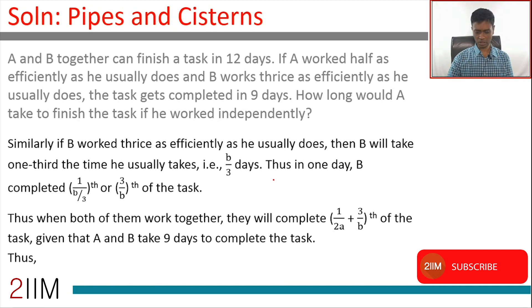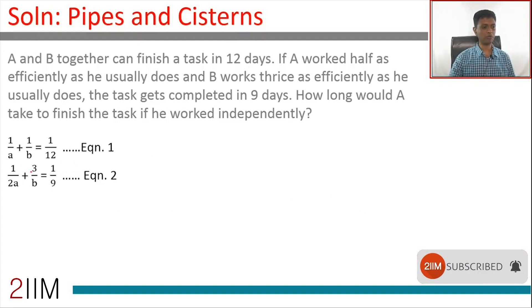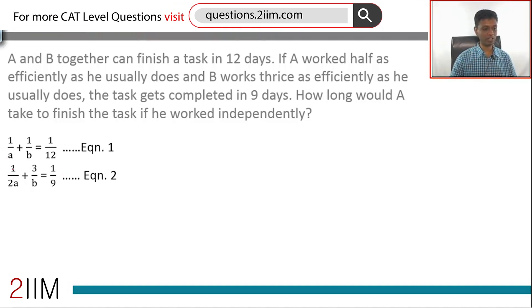That's the equation we've got here: 1/2a + 3/b. Now let's take these two equations: 1/a + 1/b = 1/12, and 1/2a + 3/b = 1/9. We just need to manipulate this and then simplify. I'm going to multiply the second equation by 2.